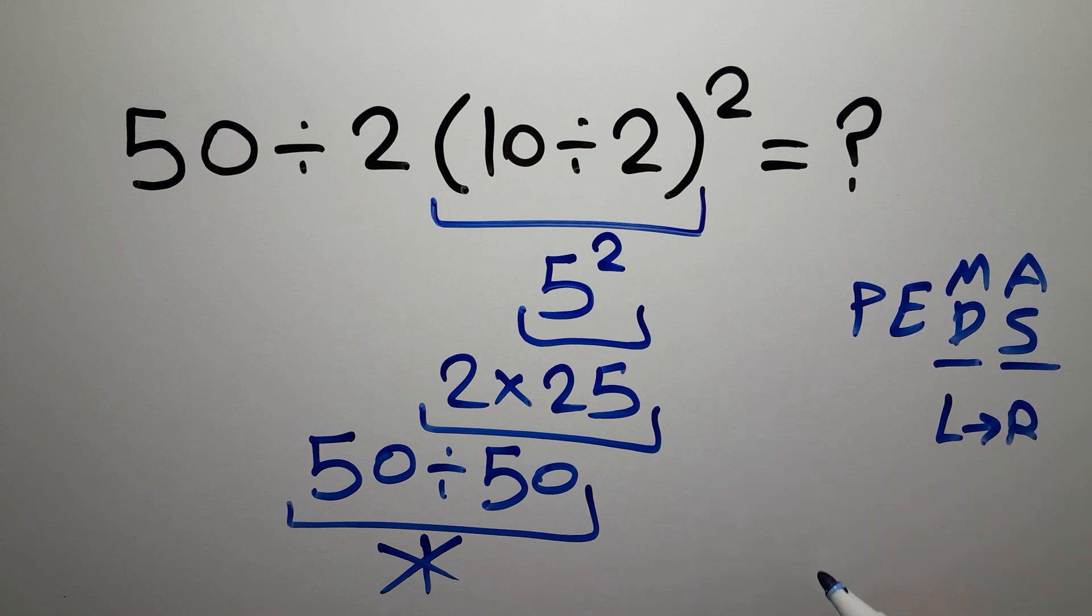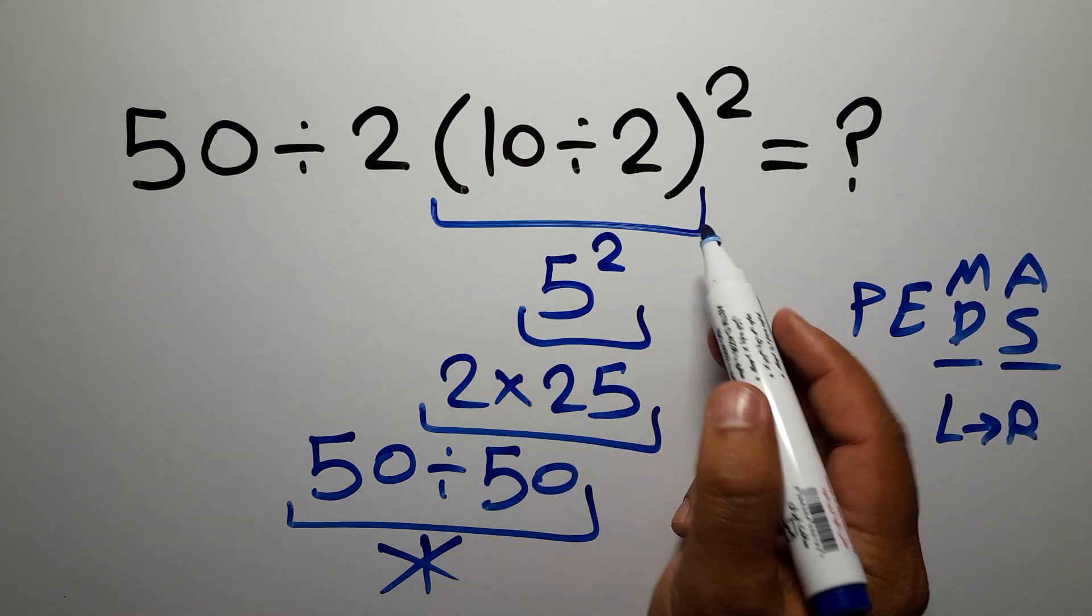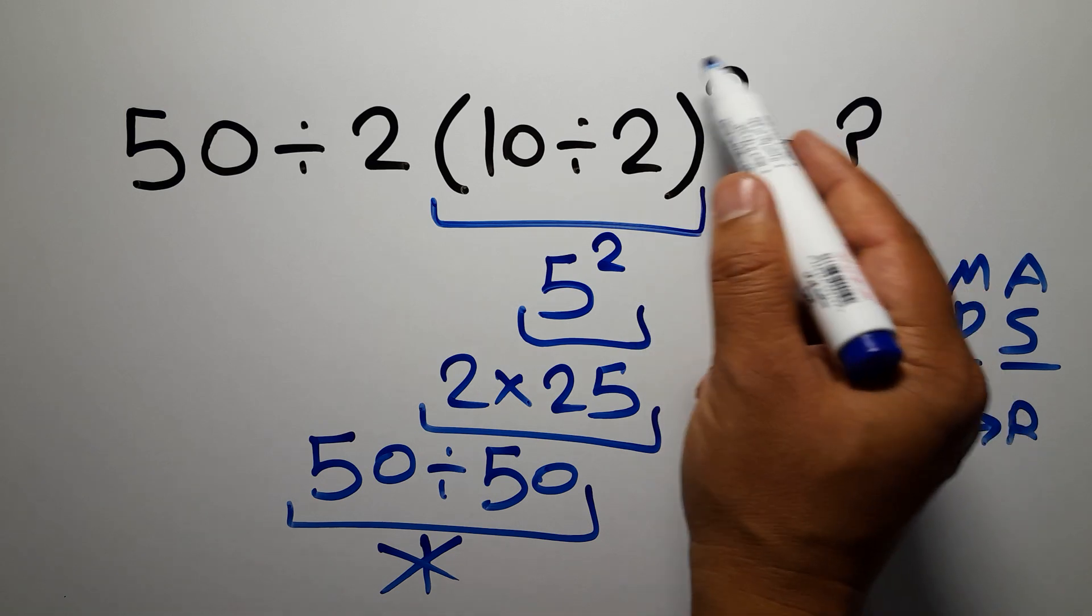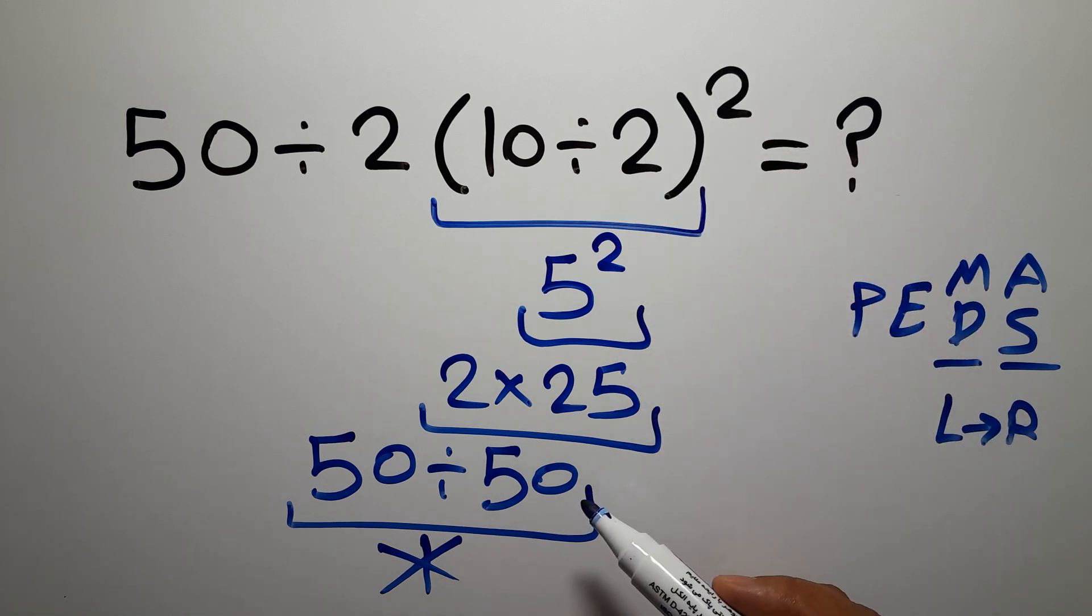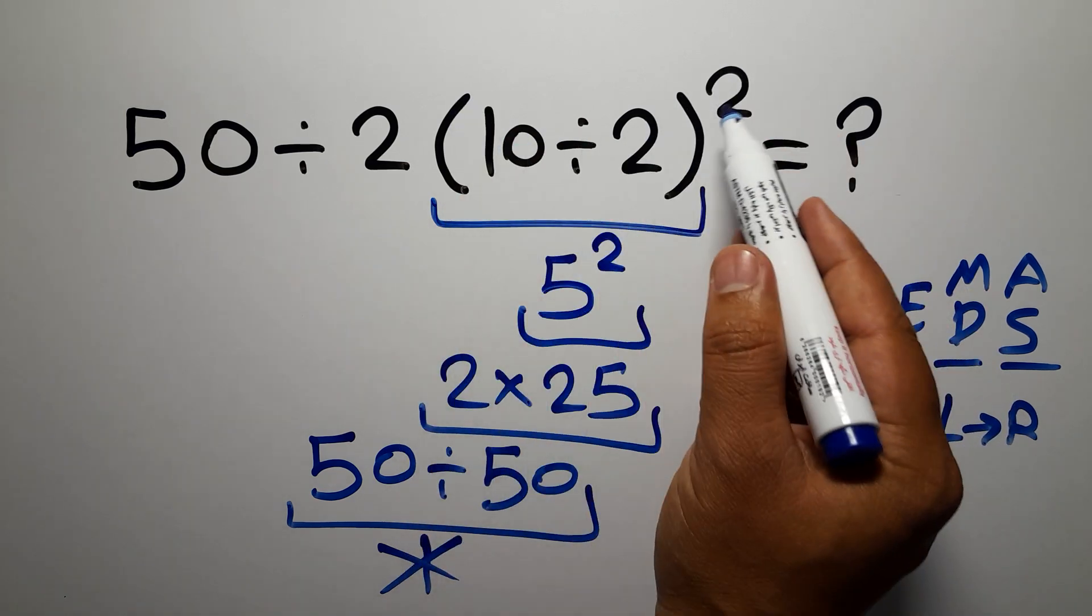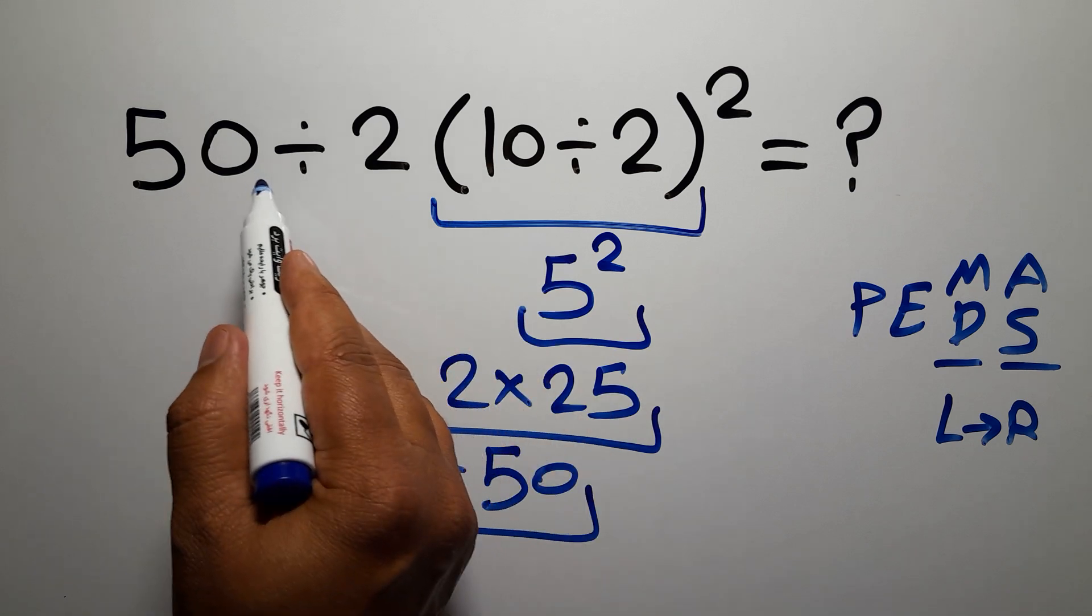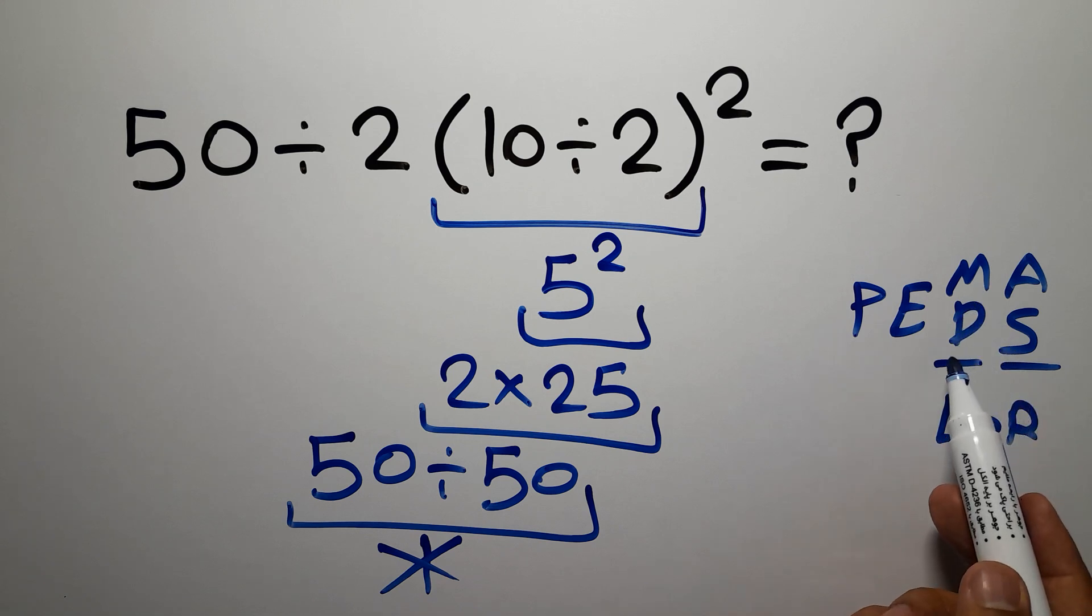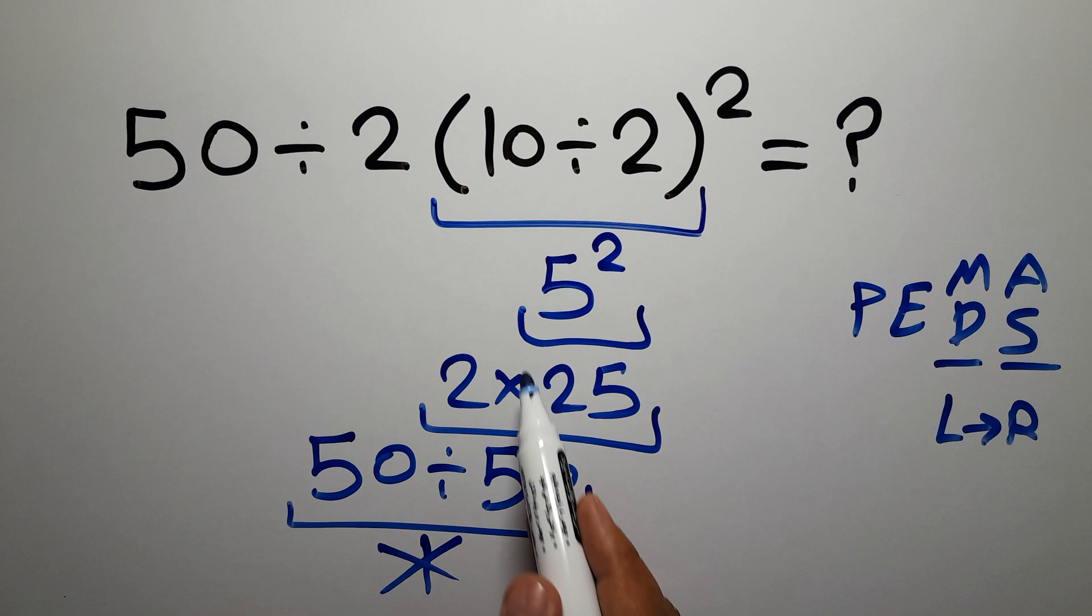The same applies to addition and subtraction. So here, first we do the parentheses, then this exponent. After the exponent, we have to do this division, not this multiplication, because multiplication and division have equal priority and we work from left to right. If we do the multiplication before the division, it is wrong.